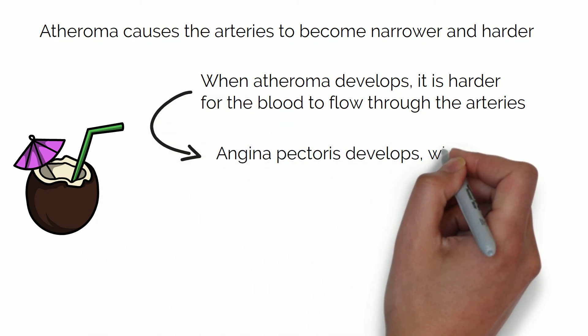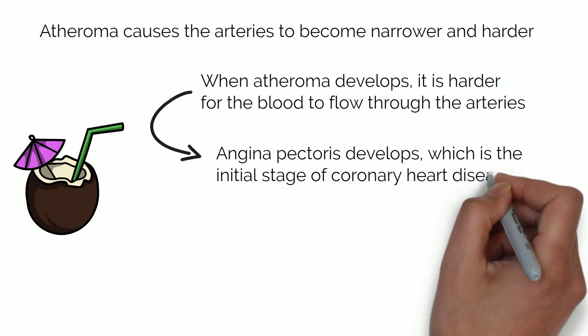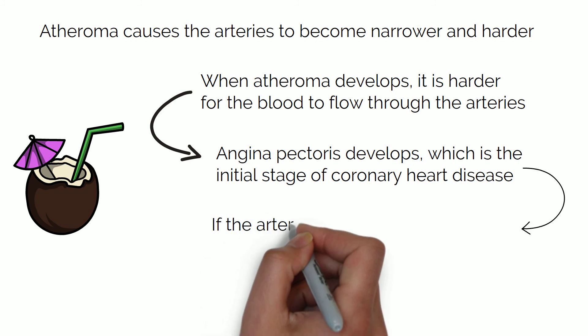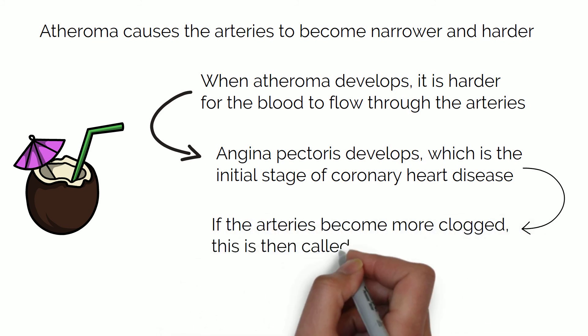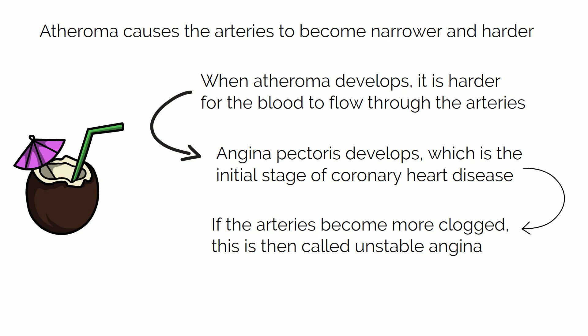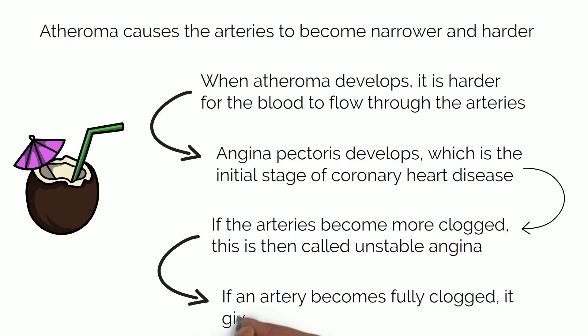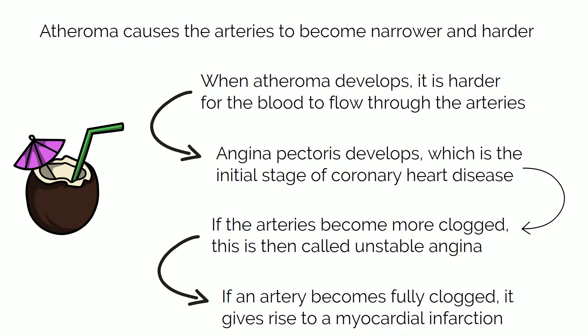When this buildup begins, it gives rise to a disease called angina pectoris, which is the initial stage of coronary heart disease. At this point, blood flow is disrupted but still continues. If the condition develops further and the arteries become more clogged, this is called unstable angina, when the heart really starts to struggle and blood flow becomes even more disrupted. At this point, pieces of plaque can dislodge from the arteries and clog up other arteries even more. If an artery becomes fully blocked with plaque, this gives rise to a myocardial infarction — most commonly known as a heart attack — which can be deadly if not treated promptly.